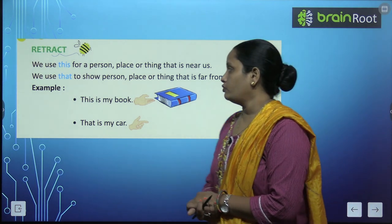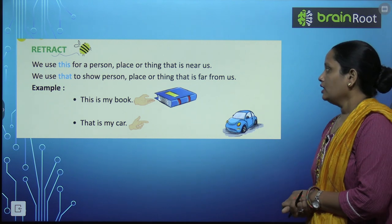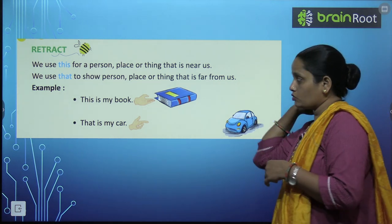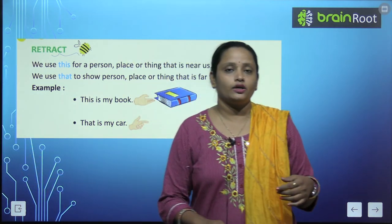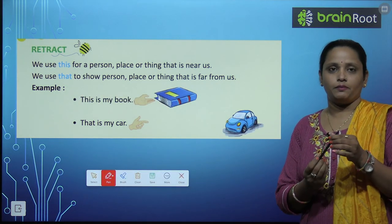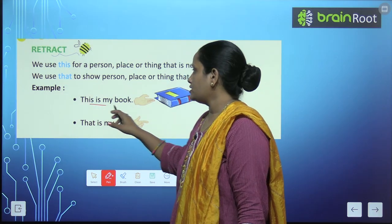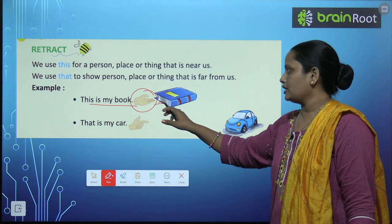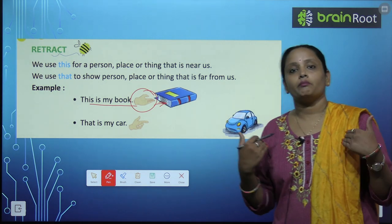We use 'this' for a person, place or thing that is near to us. So when do we use 'this'? When we are talking about a person, place or thing that is near to us. This is a pen, and this is my book. You can see how close it is to us, so this is my book.